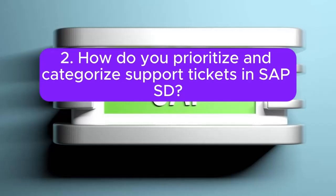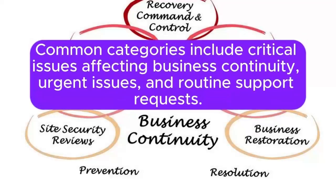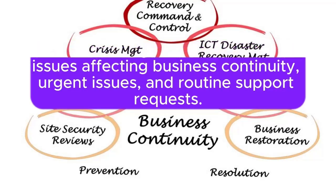Question 2: How do you prioritize and categorize support tickets in SAP SD? Answer: Support tickets are prioritized based on their impact on business operations. Common categories include critical issues affecting business continuity, urgent issues, and routine support requests.